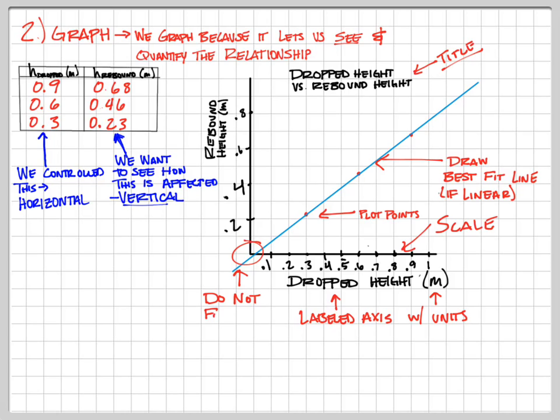Before we move on to the quantifying the relationship part, just remember, we do not force our line through the axis. If it goes through the origin, great. If it doesn't, great. Your best fit line doesn't care where the origin is. It cares where your data is.